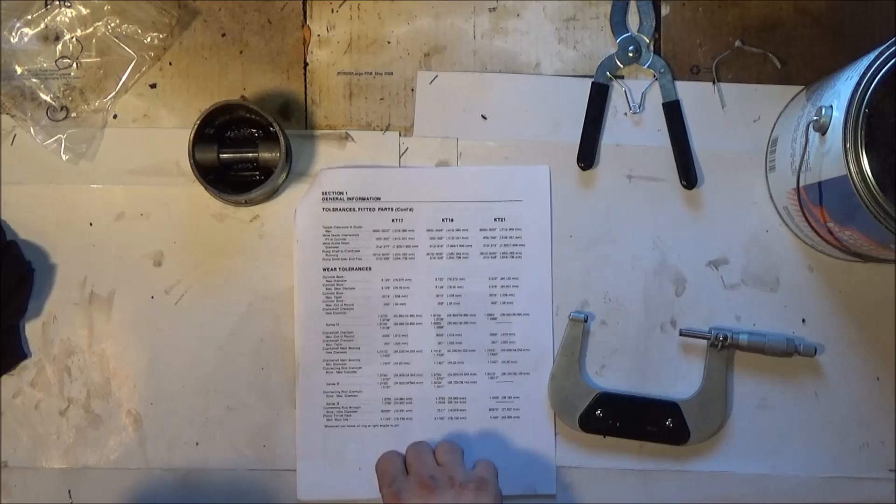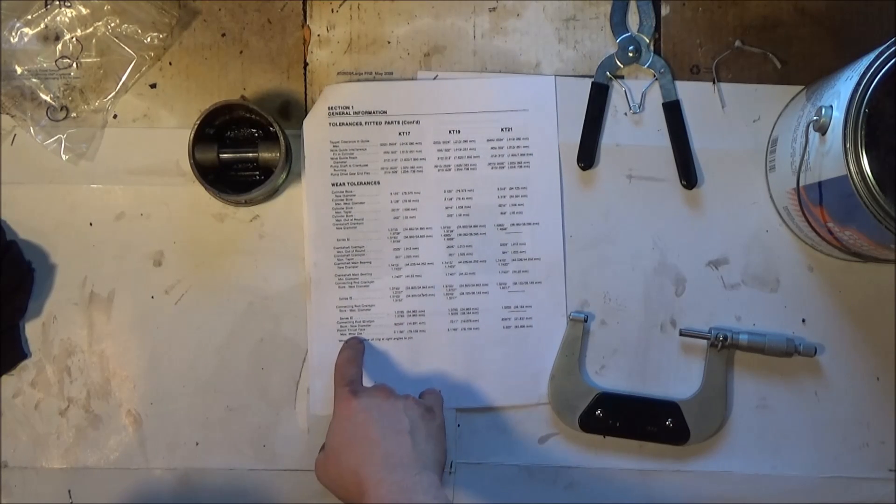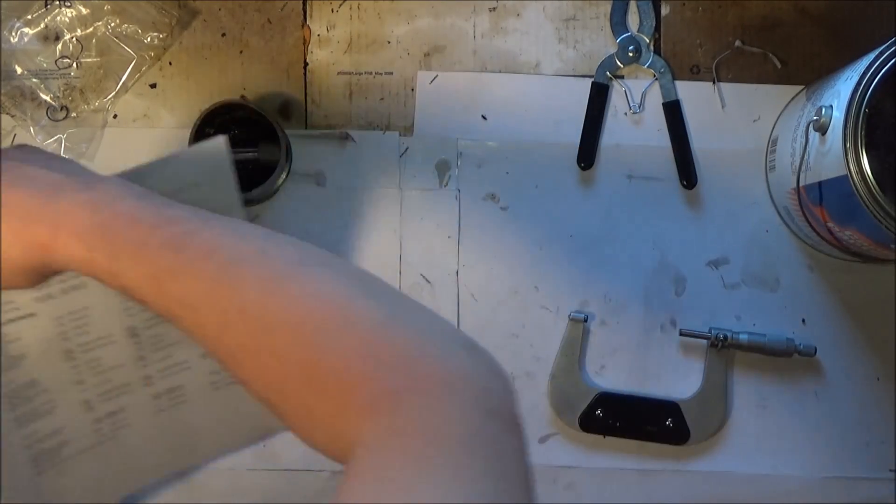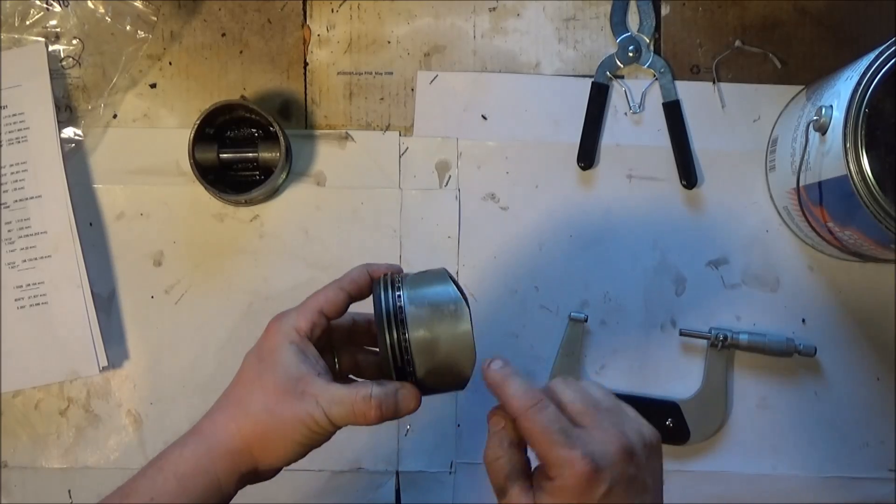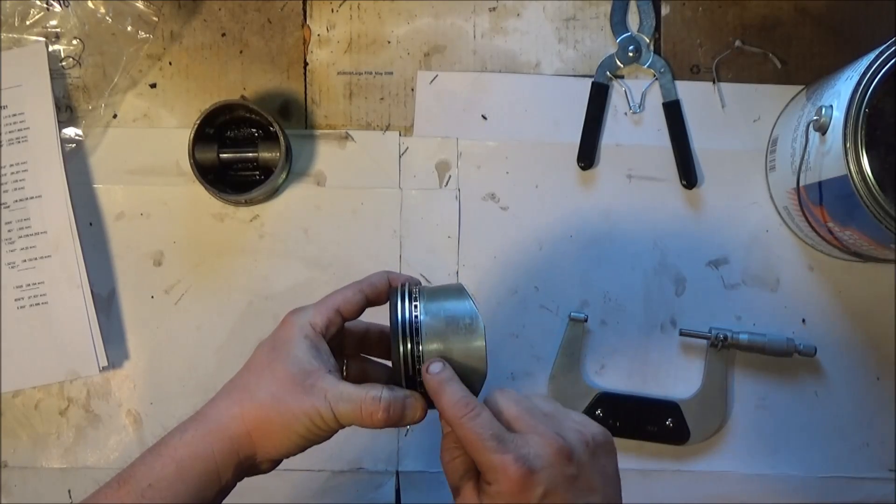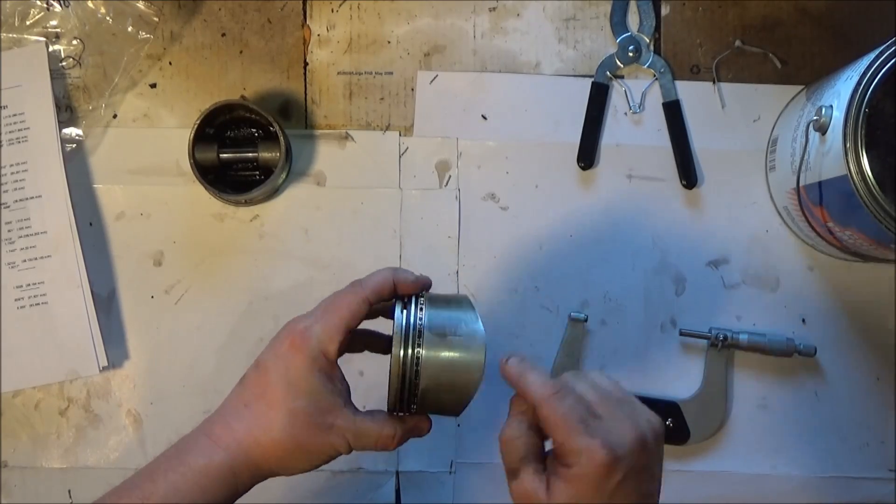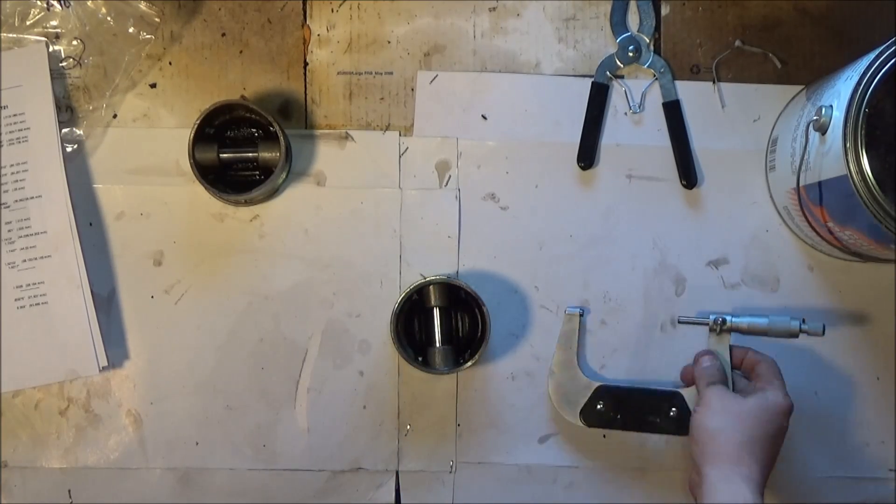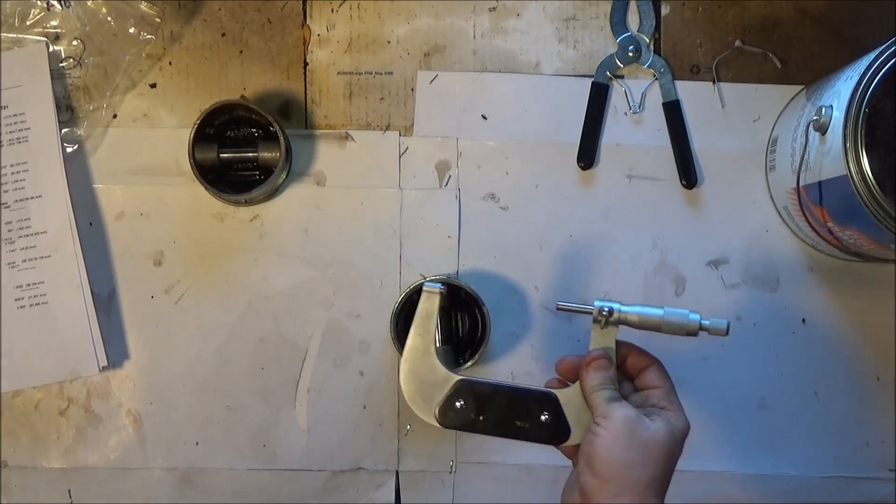Now what we're going to check is piston thrust face, which is measured just below the oil ring at right angles to the pin. You can see that's where, if anywhere, wear is going to take place. You'll need a 3 to 4 inch micrometer.